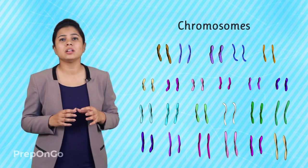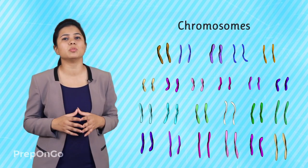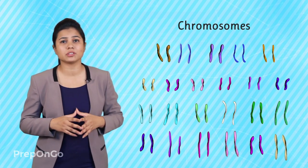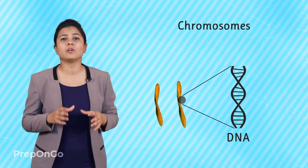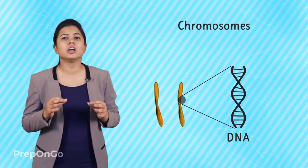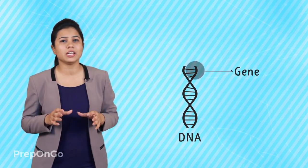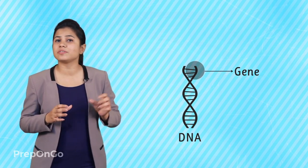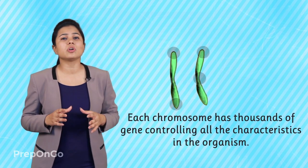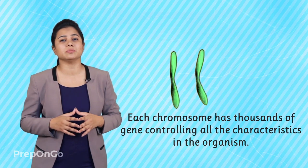Now, what is a gene actually? Let's try to find out. Each cell, including the sex cell, contains thread-like structures in the nucleus called chromosomes. A human cell has 23 pairs of chromosomes. A chromosome is made up of DNA, or deoxyribonucleic acid, which is a helical molecule. A gene is a unit or segment on the DNA that is present and controls specific characteristics in an organism. Each chromosome has thousands of genes controlling thousands of characteristics in the organism.